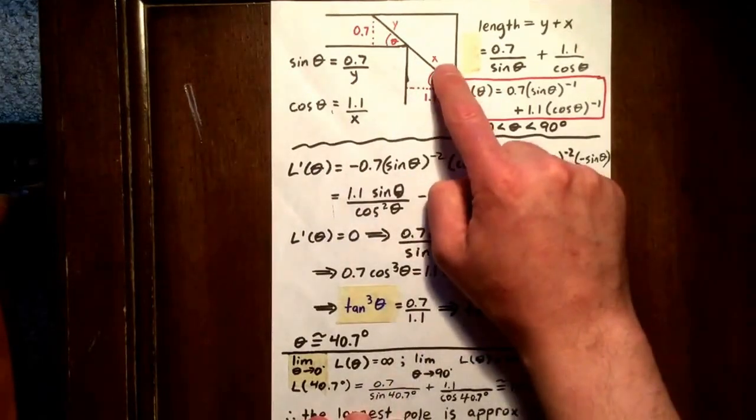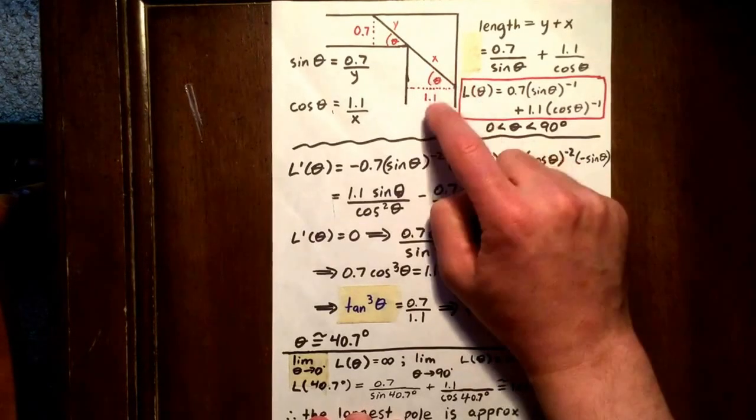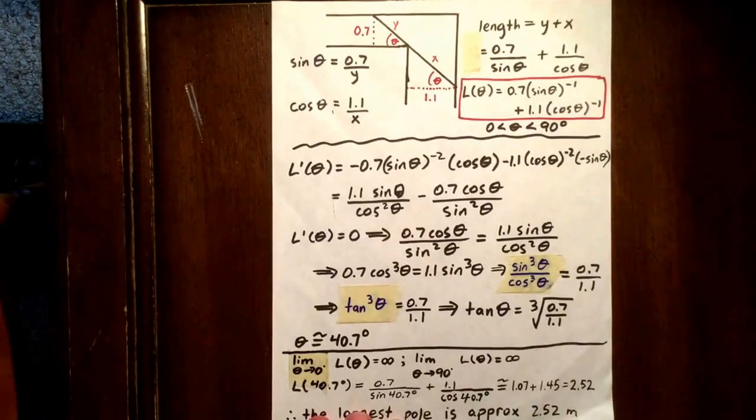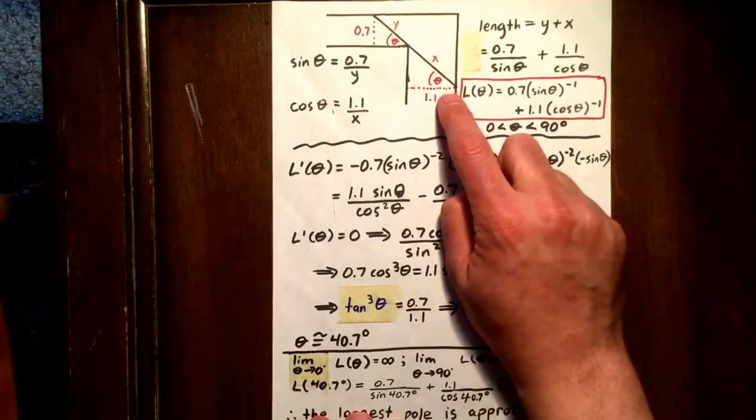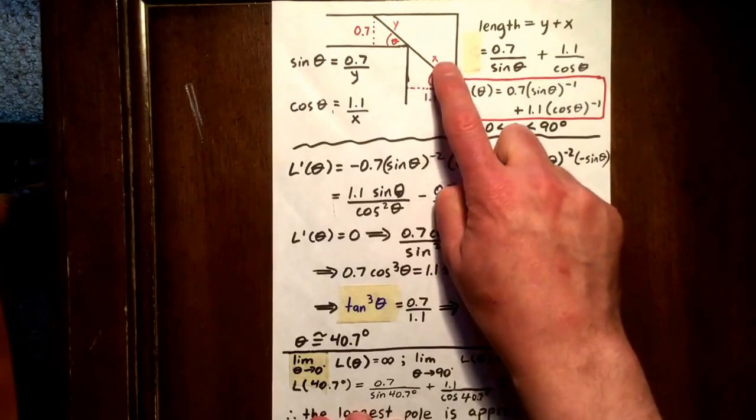Using trig principles, we see that X is actually equal to 1.1 over cos theta. If you want to think about it in terms of SOHCAHTOA, you could say that the cosine of theta is 1.1 over X.